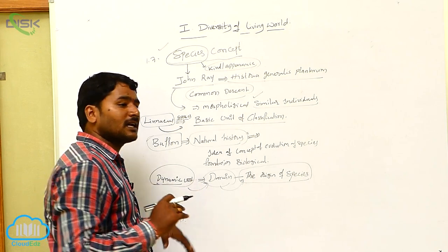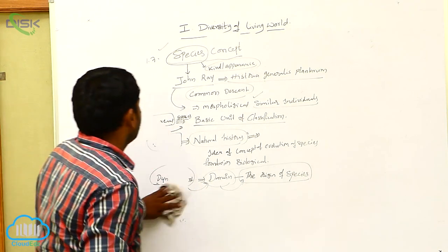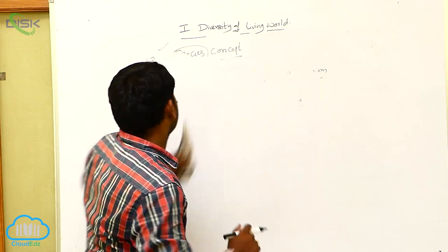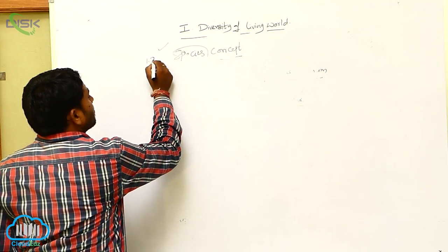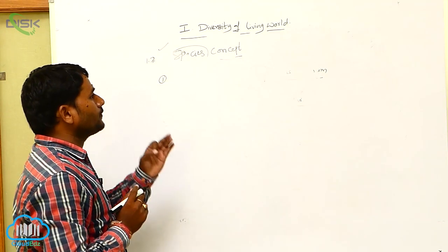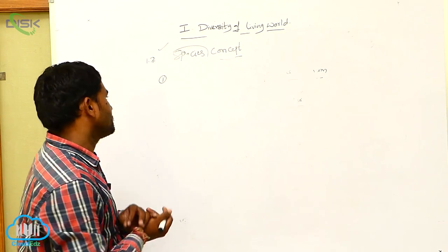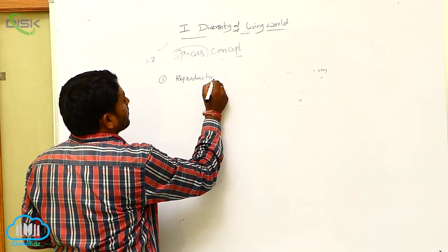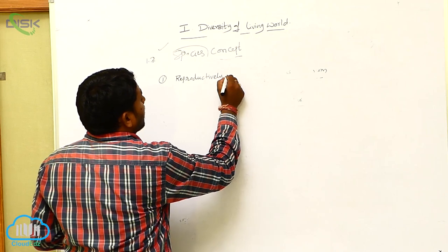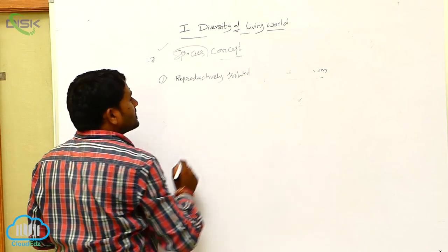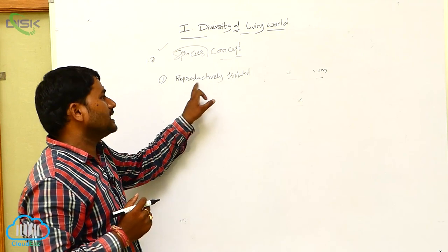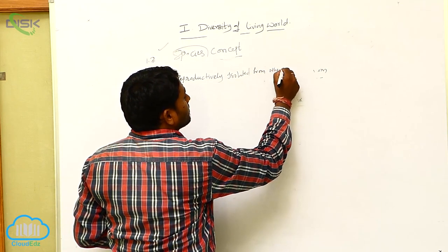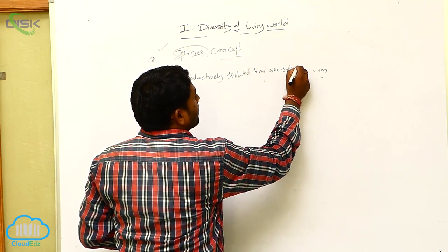Let us see the fundamental characters of species. This is a very important four-marks question — the species concept. There are fundamentally four characters regarding the species. First, species are reproductively isolated — the individuals belonging to a species are reproductively isolated from other individuals.